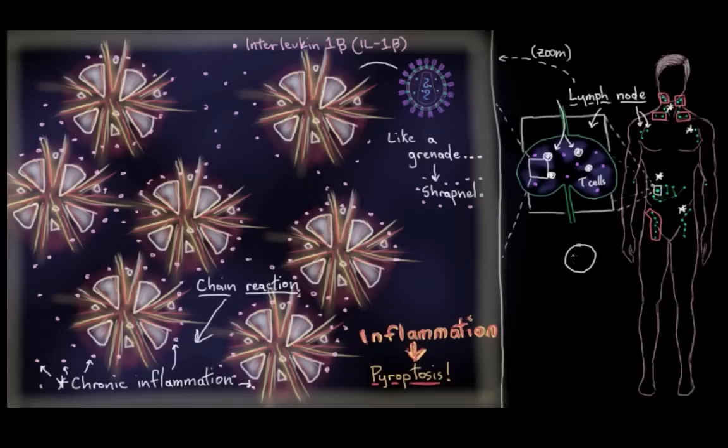So, before we used to think that we lost the majority of our CD4 cells because of HIV infecting each cell leading to apoptosis of that one cell. But, now we know that it's this ridiculous amount of pyroptosis and the resulting chain reactions of more and more pyroptosis that it causes that's responsible for the vast majority of CD4 cell loss in an HIV infection.